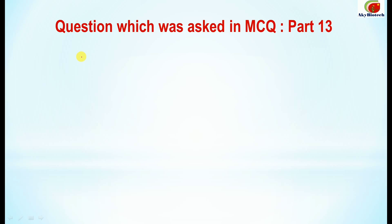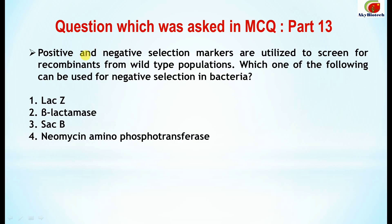This was the question asked in the previous video: positive and negative selection markers are utilized to screen for recombinants from wild-type populations. Which one of the following can be used for negative selection in bacteria? The correct answer for this is SACB. Many have tried this and answered it correctly.